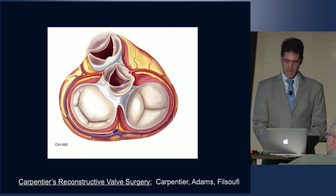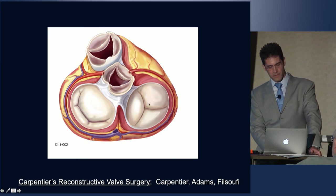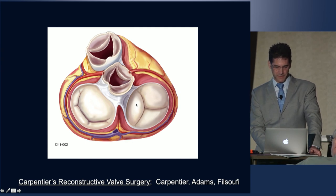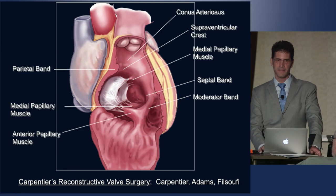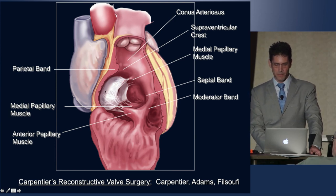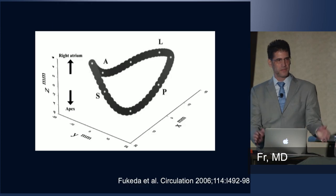A lot of you know this anatomy on echo. Looking at the tricuspid valve on the right side of the heart, you know its relationships to the fibrous structures: the septal leaflet, anterior and posterior leaflets, and its relationships to the mitral valve, aortic valve, and right coronary artery. Noting the septal leaflet's proximity to the AV node bundle, the aorta, the aortic valve, and the mitral valve — and the inside of the ventricle showing the subvalvular apparatus and its differences from the mitral valve.